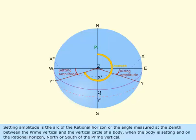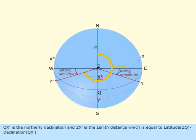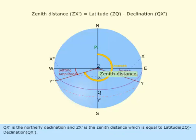QX' is the northerly declination, and ZX' is the zenith distance, which is equal to latitude ZQ minus declination QX'.